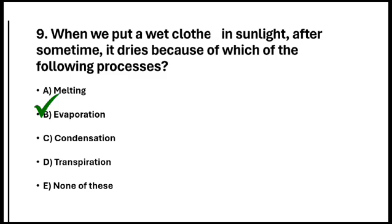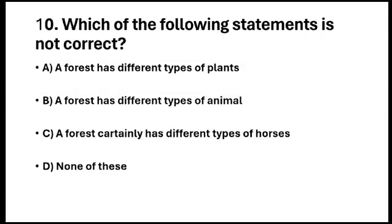So the answer is option B. Question number 10. Which of the following statements is not correct? Option A. A forest has different types of plants. Option B. A forest has different types of animals. Option C. A forest certainly has different types of horses. Option D. None of these. So the answer is option C.